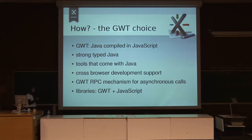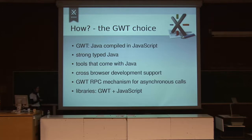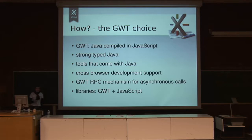There's also the GWT RPC mechanism for asynchronous calls, which is basically a remote procedure call mechanism through which you do AJAX calls. And there are also the libraries that come with GWT, either GWT-built libraries or JavaScript libraries that can get a GWT wrapper.